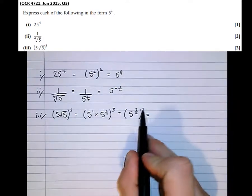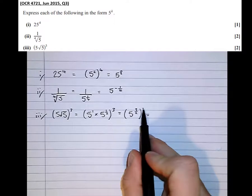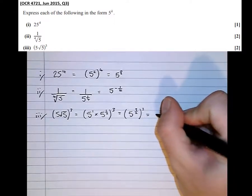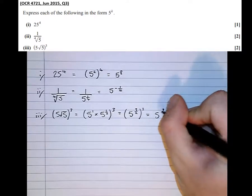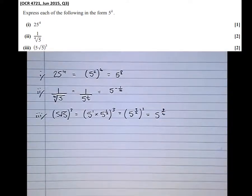And as before, times in these powers together. When one power is outside a bracket like this, we times the powers together to give 5 to the power of 9 over 4. And that's the answer to that one.